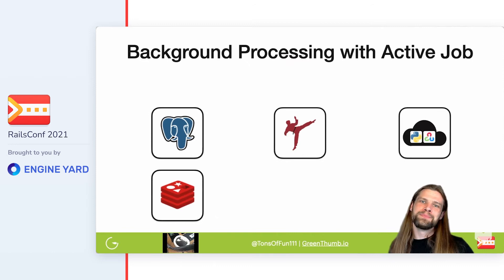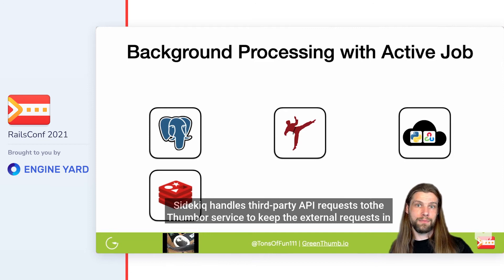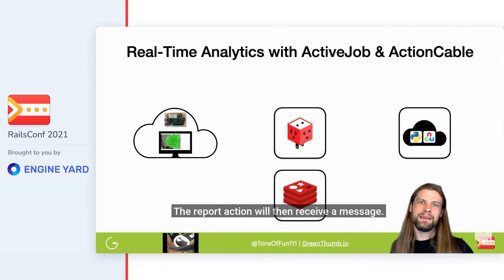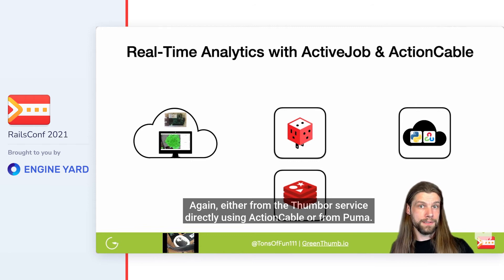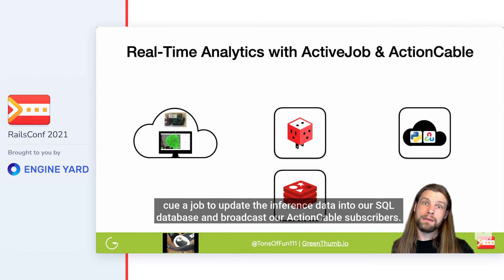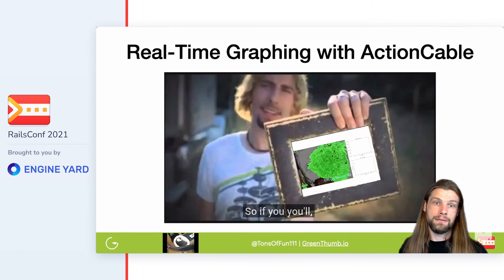The job will make a request to the Thumbor image service to process the image URL and send back a response to the channel's report action. Sidekiq handles the third-party API request to the Thumbor service to keep external requests in the background and off of our Puma workers' plate. The report action will then receive a message either from the Thumbor service directly using Action Cable or from Puma. In this visualization, you see it coming from the Thumbor service directly to our AnyCable service, which can enqueue a job to update the inference data into our SQL database and broadcast our Action Cable subscribers. The Action Cable consumers subscribed to this channel can then render the image and graph the values.